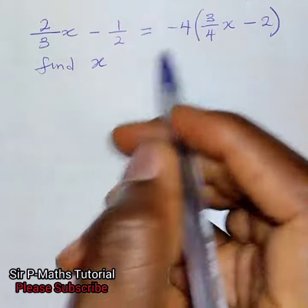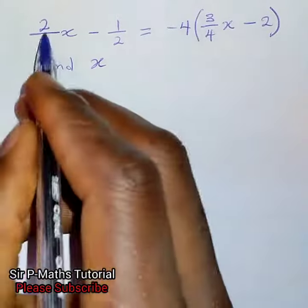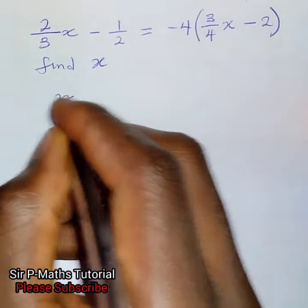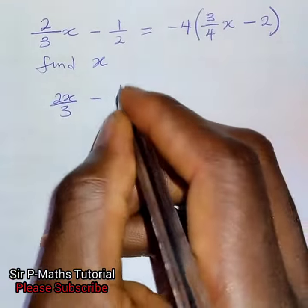Okay, let us open this bracket first. 2 over 3x is simple as 2x over 3 minus 1 over 2.